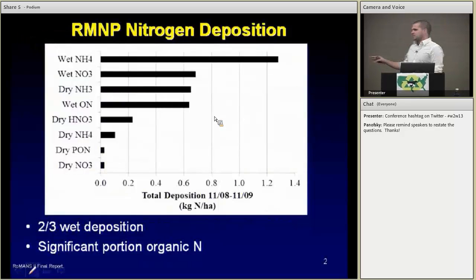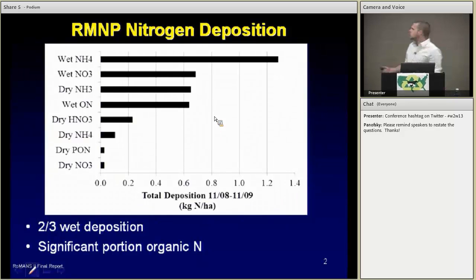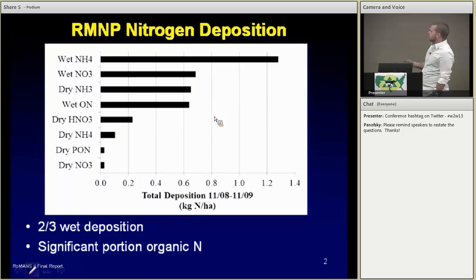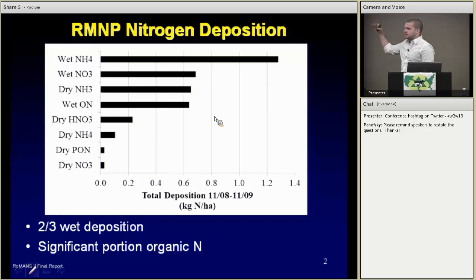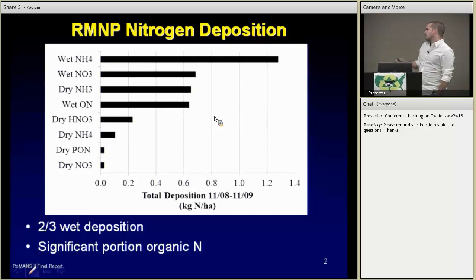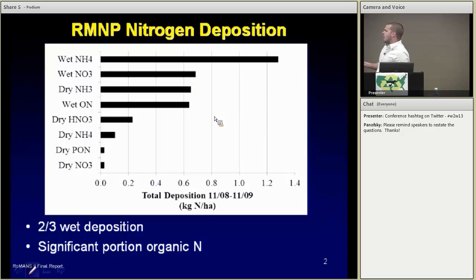First off, we've talked about ROMANS a lot, and this is another figure from ROMANS called ROMANS 2. They did one study in 2006; this was in 2008-2009, and it's showing the same thing. If you look at the graph, you have total deposition throughout a year-long period from November to November — wet ammonium deposition, followed by wet nitrate deposition, then dry deposition of ammonia gas. A big takeaway here is that ammonia composes two of the top three pathways of nitrogen entering Rocky Mountain National Park, and wet deposition still dominates.